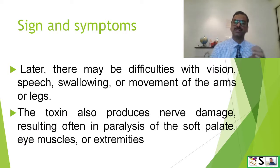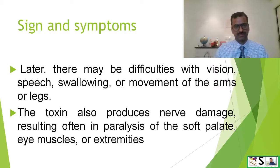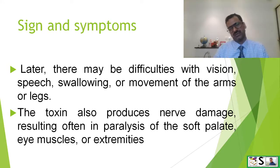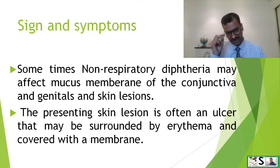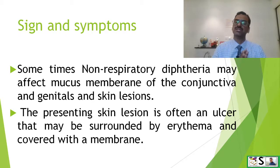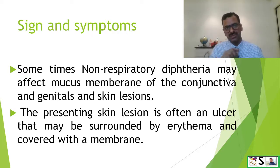Later there may be difficulties with vision, speech, swallowing, and even movement of the arms and legs. The toxin also causes nerve damage resulting in paralysis of the soft palate, eyes, muscles, or extremities. Sometimes cutaneous diphtheria may affect the mucous membrane of the conjunctiva, genitals, ears, and even cause skin lesions. The presenting skin lesion is often an ulcer that may be surrounded by edema and covered with a pseudomembrane.